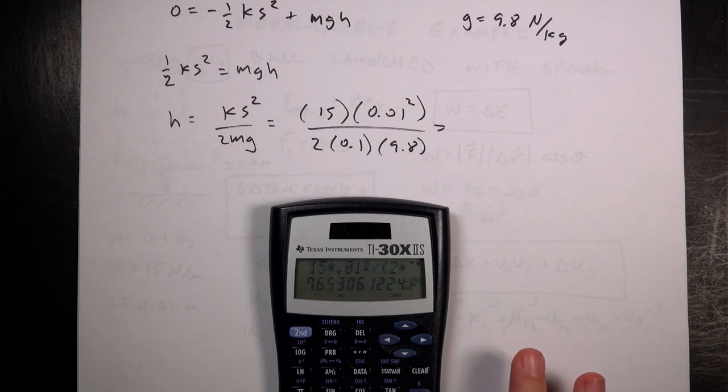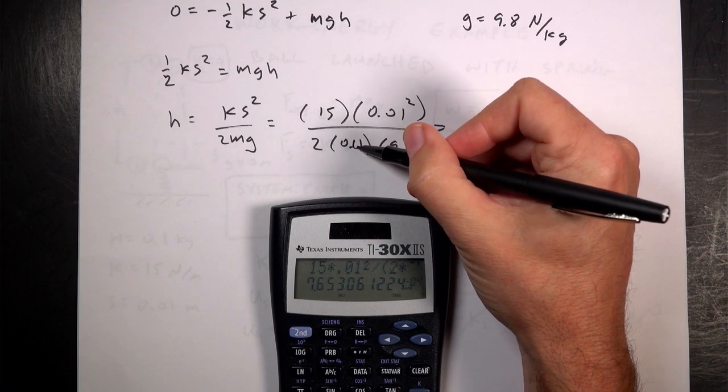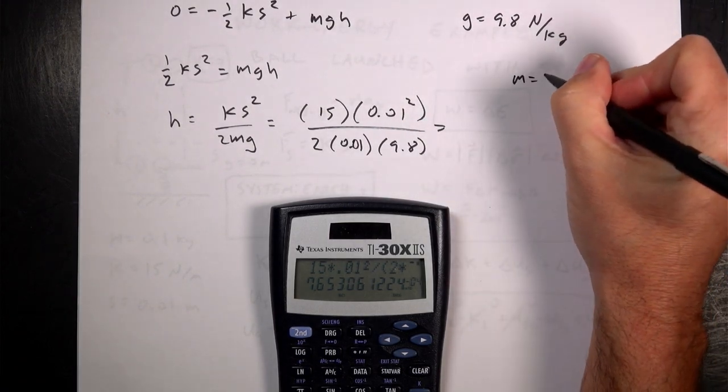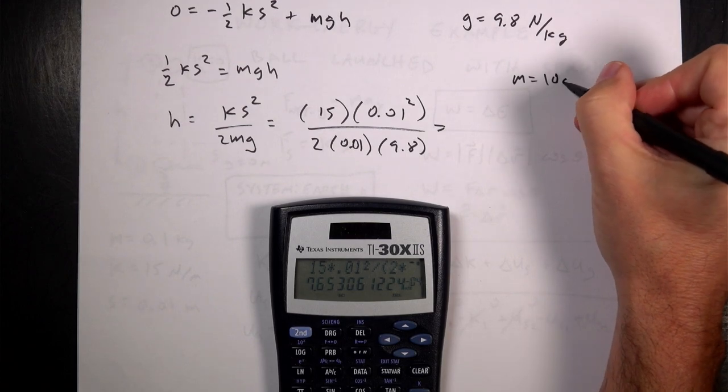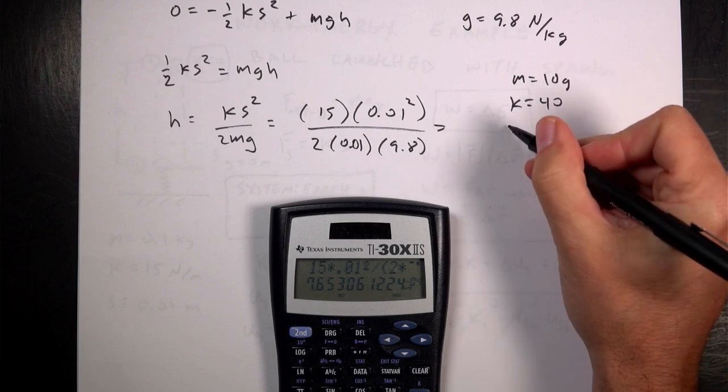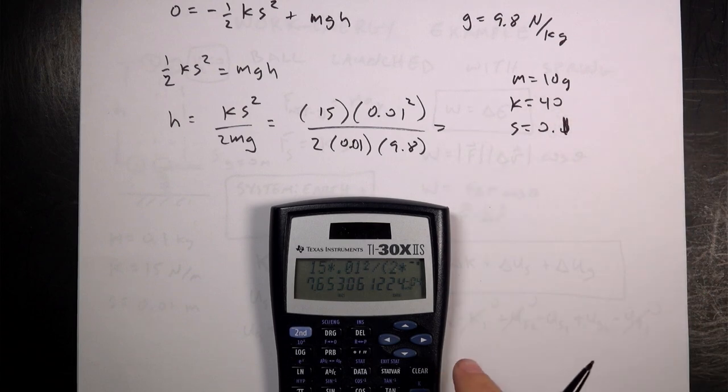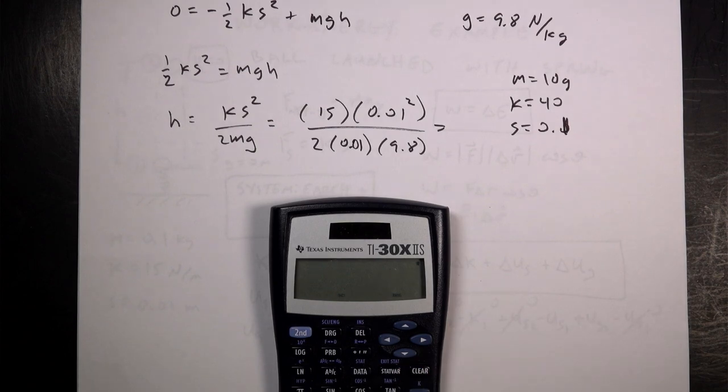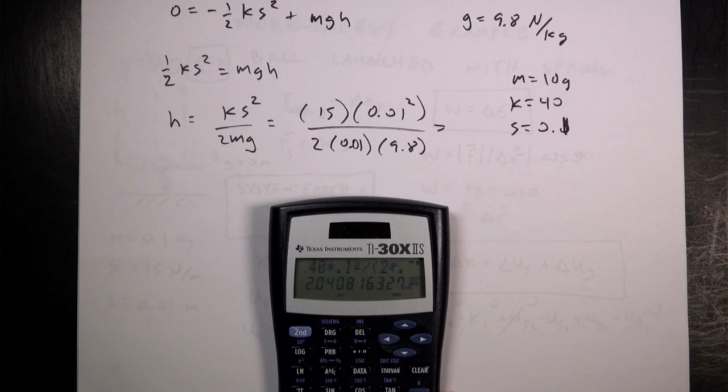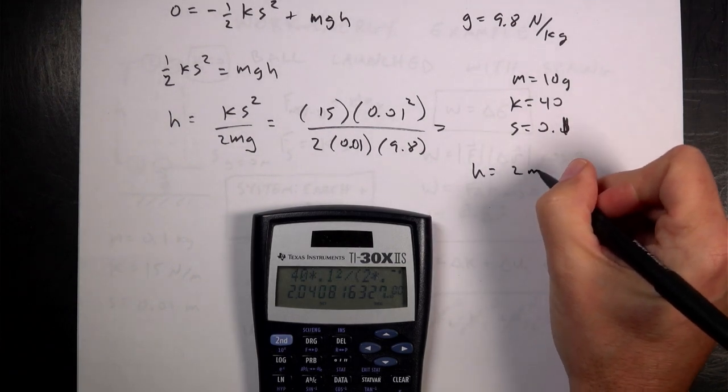Okay. Let's fix this. So let's say I compress it. Let's change the mass to 10. And so m is 10 kilograms, 10 grams. So put 10 grams. Let's put the spring constant k at 40. And let's say s is 0.1, so 10 centimeters. So if I do that, I get 40 times 0.1 squared divided by 2 times 0.01 times 9.8. And it goes 2 meters. So now h equals 2 meters. So that's going to go much higher.